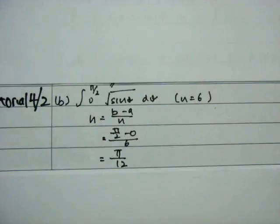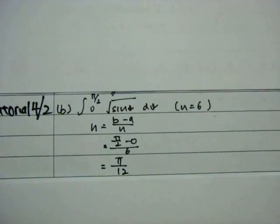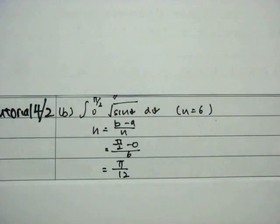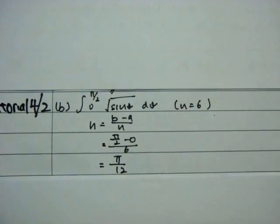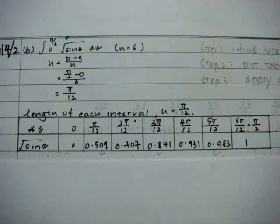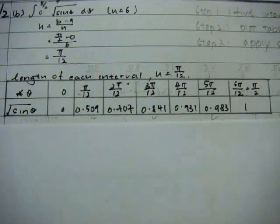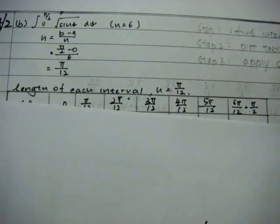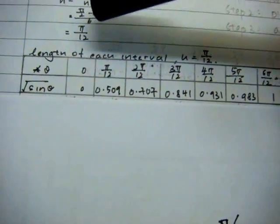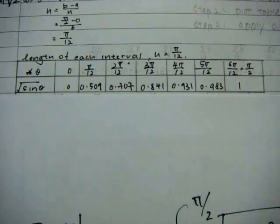With the given questions and n equals to 6, we can easily find h which equals b minus a over n, where b will be my π over 2 and a will be my 0. Thus, I will get π over 12. Then, I move on to plot the table of theta and square root of sin theta. And you can see that between the first point and the second point, the interval is π over 12 as well as you can see from the others.